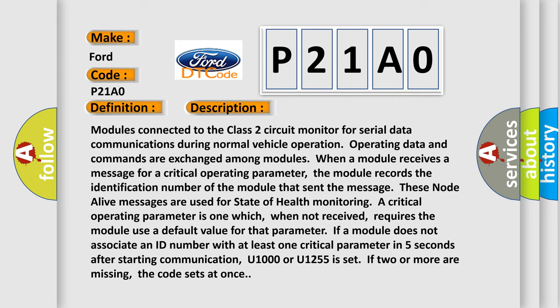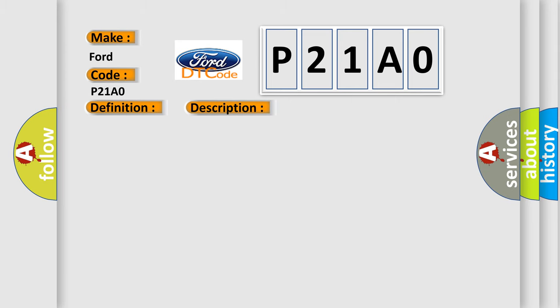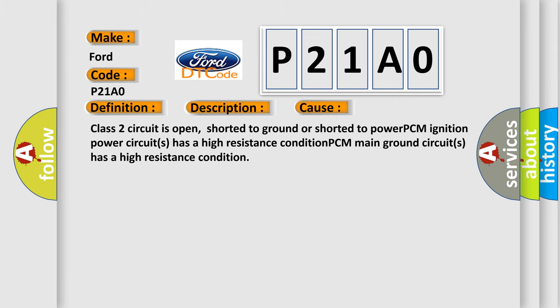This diagnostic error occurs most often in these cases: Class 2 circuit is open, shorted to ground, or shorted to power. PCM ignition power circuits has a high resistance condition. PCM main ground circuits has a high resistance condition.